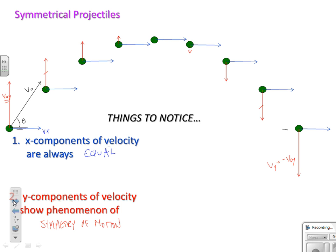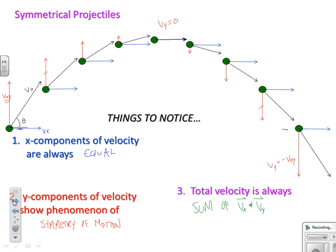Because this is a symmetrical path, the y components of velocity show the phenomenon of what I call symmetry of motion. If the thing is launched with a vertical component of its velocity that we call v-naught-y, we know at the same height there's going to be an equal speed but moving in the opposite direction. As this thing goes up, its vertical velocity gets smaller, and if we look at the same place across at the same equal height, we get the same exact speed but in the opposite direction.